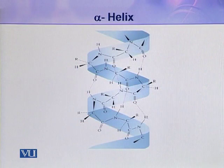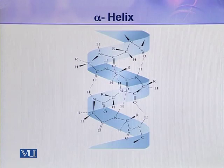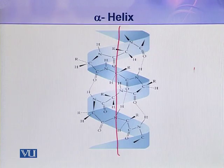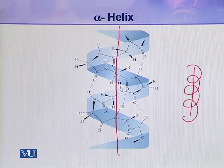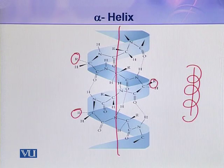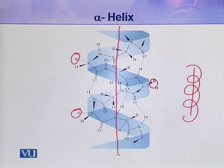In an alpha helix, the polypeptide chain is coiled round an imaginary axis, and the helix is helically coiled along this axis. In this helix, the R groups lie outside the helix while the main backbone is contained by the C-N-C-N-C-C bonds.